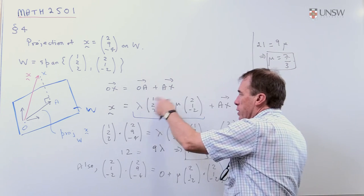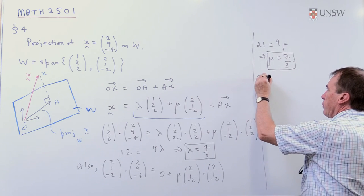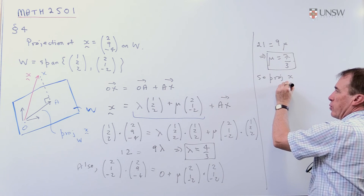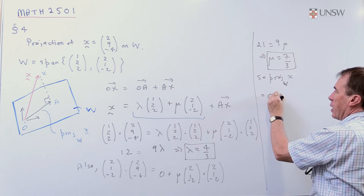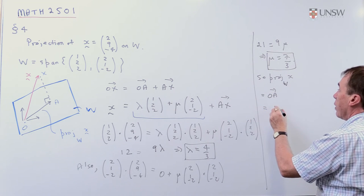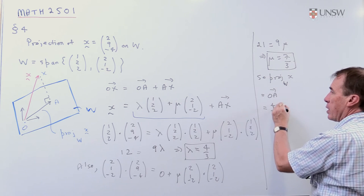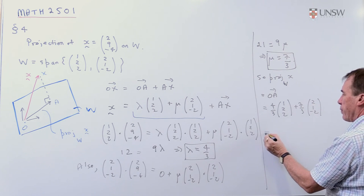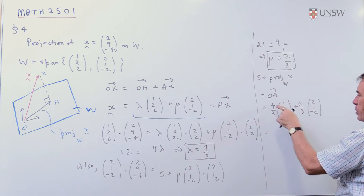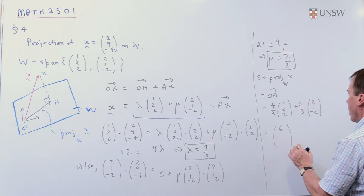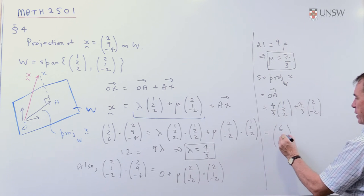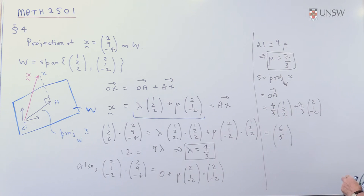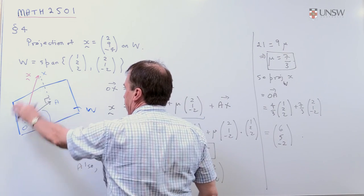Finally, then, remember what we wanted, we wanted just this expression. So the projection, then, of x onto the subspace w. This is just the vector OA, and we know what that is now. That's going to be lambda, which was 4 thirds times (1,2,2), plus 7 thirds times (2,1,-2). And when I put this over a common denominator, what do I get? I'm going to get 8 plus 7 is 15, that's 5. And I get 8 minus 14 is minus 6, which is minus 2. I'll just check my arithmetic, and that looks good. And so that vector, then, is the projection of this vector x onto the subspace.